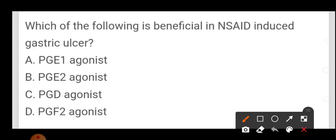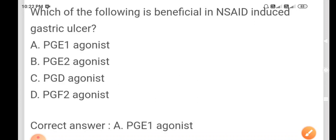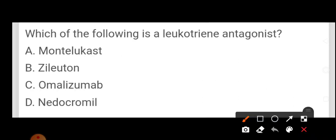Which of the following is beneficial in NSAIDs-induced gastric ulcer? PGE1 agonist, PGE2 agonist, PGD agonist, PGF2 agonist. Answer is PGE1 agonist, misoprostol. PGE1 agonist.